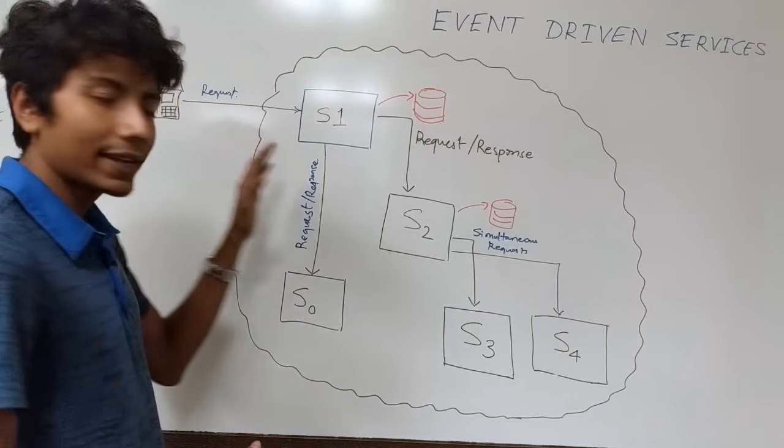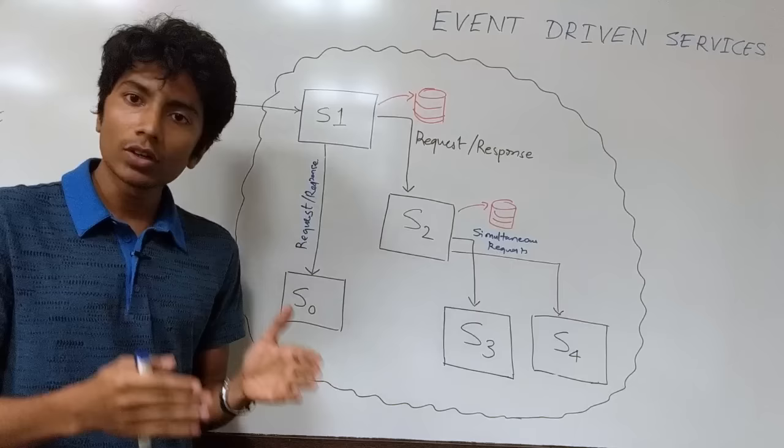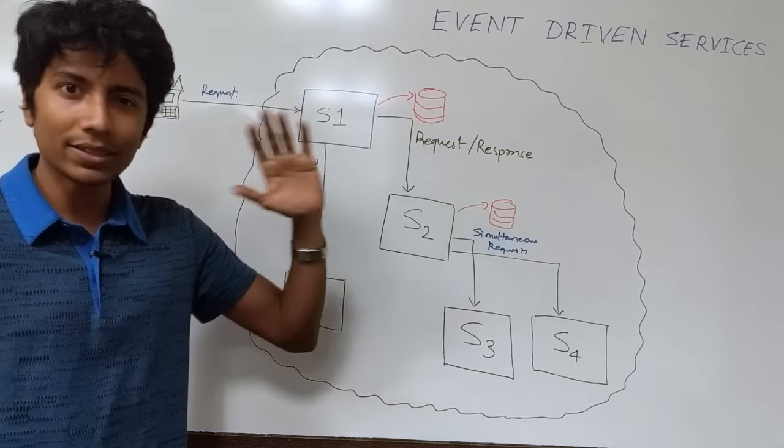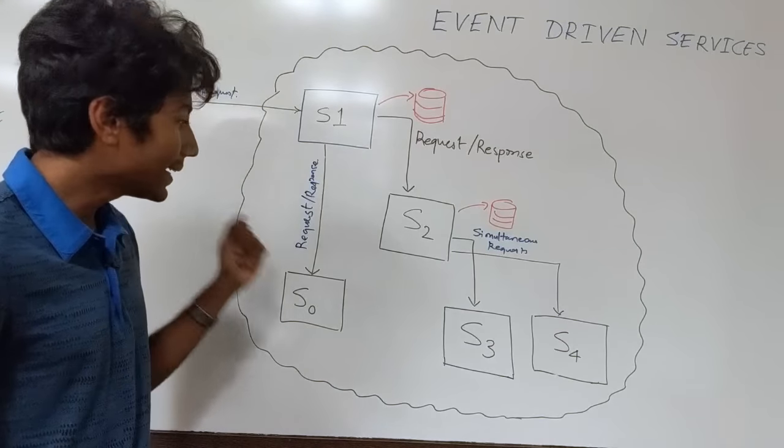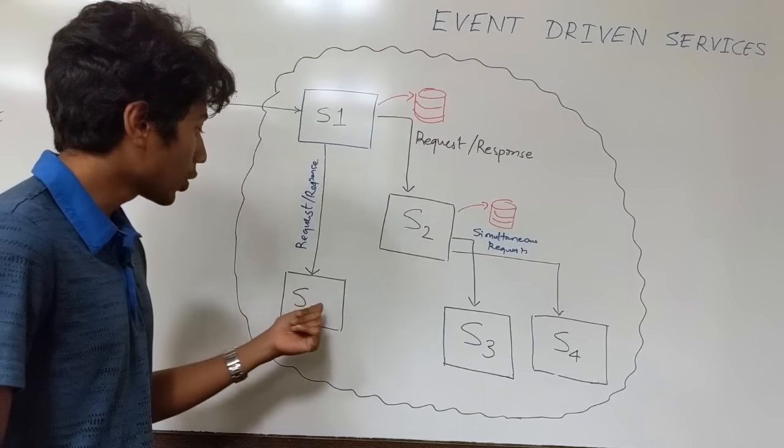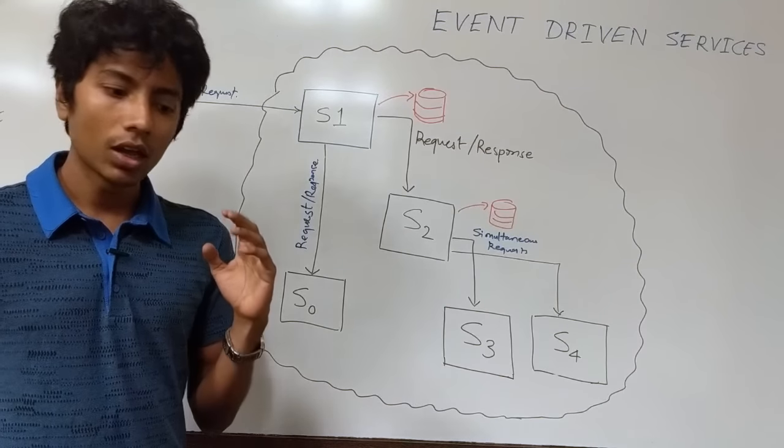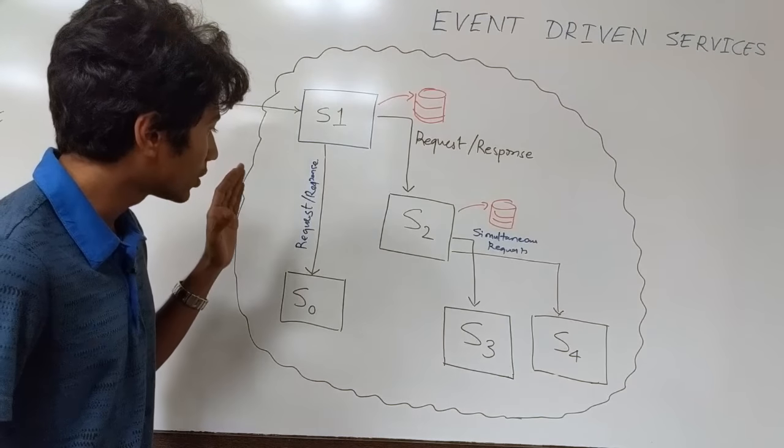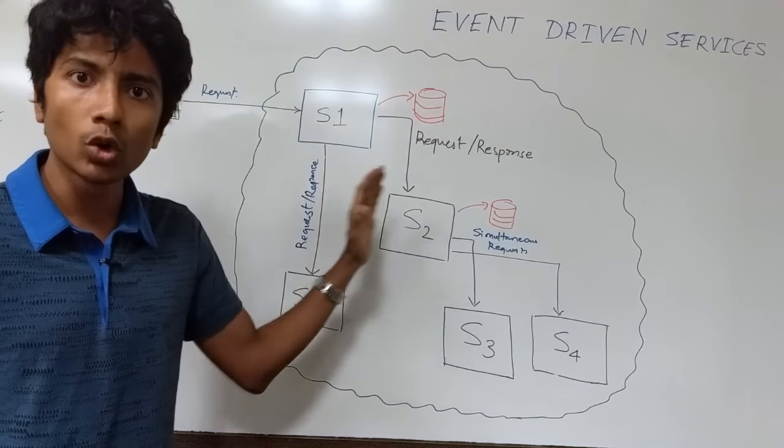We have a client connected to S1. It sends a request. After S1 has processed this request and made some changes if required, it needs to send two messages to S0 and S2.